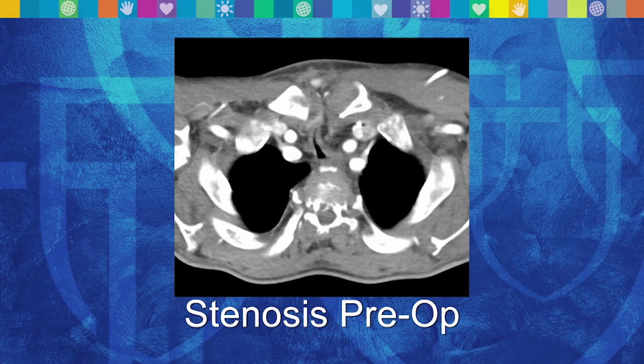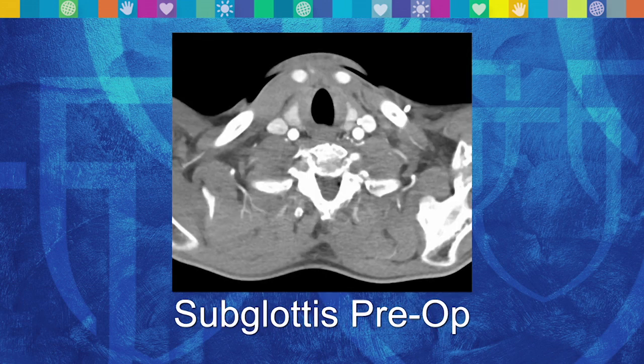Comparing that to a CT cut higher up in his airway above the narrowing, you can see a horseshoe-shaped black space that's dramatically bigger — that's what his airway was supposed to look like. So after taking out that stenotic area and reattaching the trachea back together, what was his future like and what kind of improvements did he have?